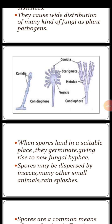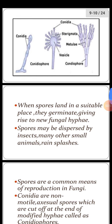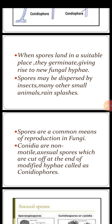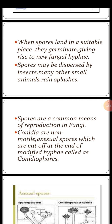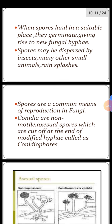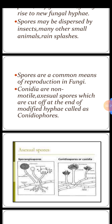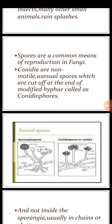Asexual structures like conidia — which are asexual spores — are produced on stalk structures called conidiophores. When spores land on a suitable place, they germinate or grow, giving rise to new fungal hyphae — thread-like structures. Spores may also be dispersed by other agencies like insects, small animals, and rain splashes or droplets. Spores are a common means of reproduction in fungi.